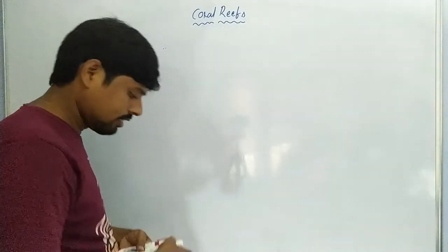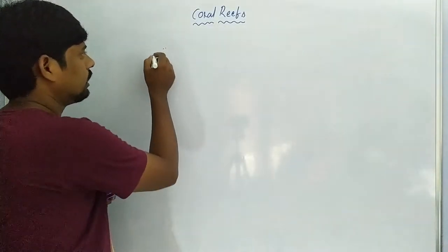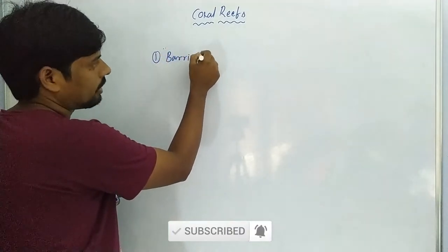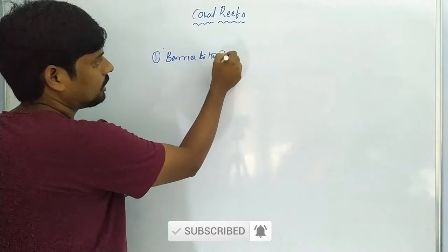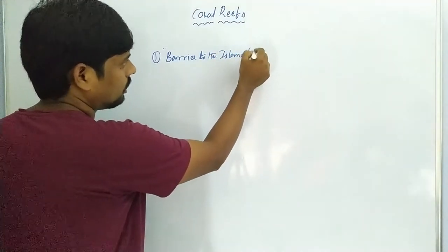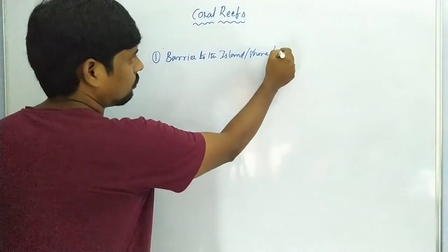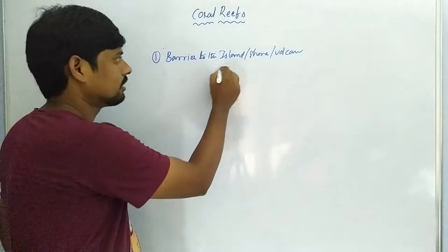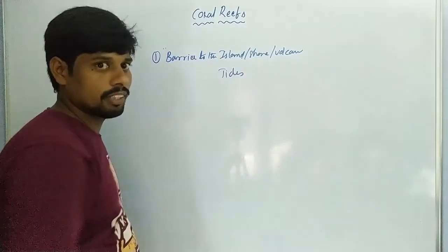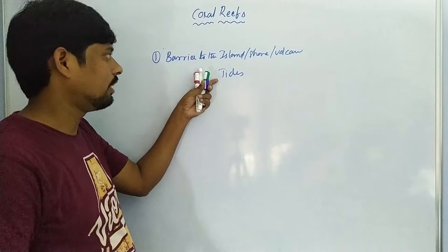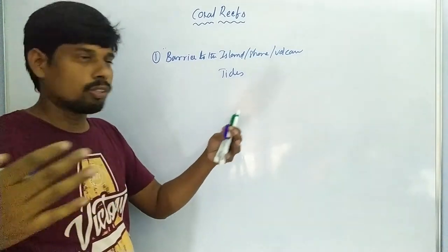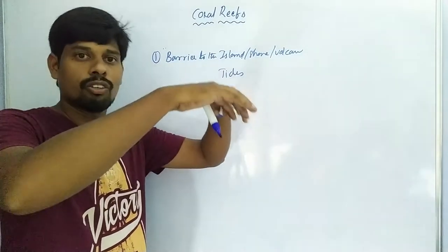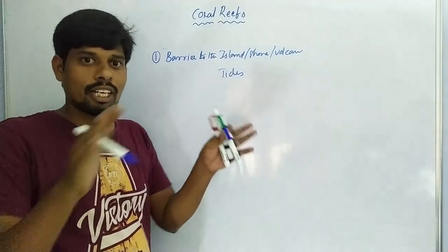So, the important thing is, first barrier to the islands, tides, shores. Tides are different than the waves. The waves are different from the land. The land is connected to the land. Tides are different from the land.